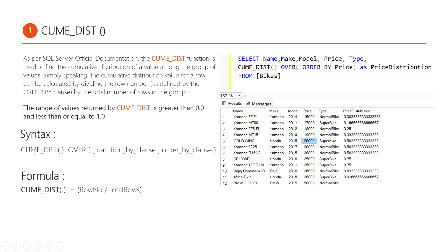The syntax of CUME_DIST is: CUME_DIST(), and this function doesn't take any parameter — that's why it's a null-parameter function. We use the OVER clause, which takes two things as parameters: first, the PARTITION BY clause, and second, the ORDER BY clause. The PARTITION BY clause is optional for this function.